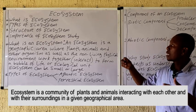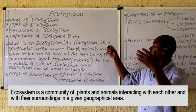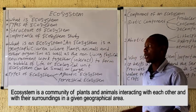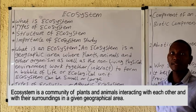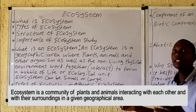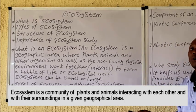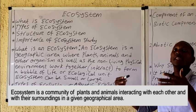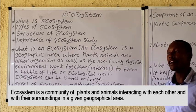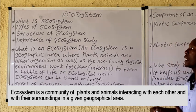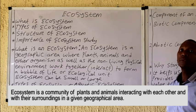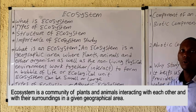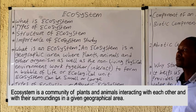What is an ecosystem? As you can see from the board, an ecosystem is a geographic area where the plants, animals, and other organisms, as well as their non-living environment, interact to form a bubble of life.